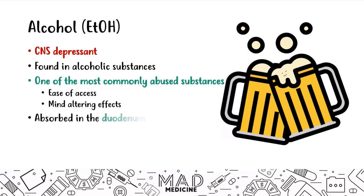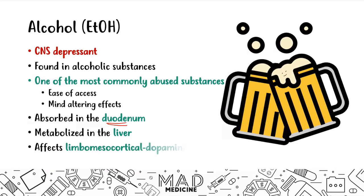Some things you should know: alcohol is absorbed in the duodenum and it's metabolized in the liver. We're going to be talking about its toxic effects on the liver in a bit. It also affects the limbo-mesocortical dopaminergic pathway, which may or may not come up on Step 1, but it's something you now know.